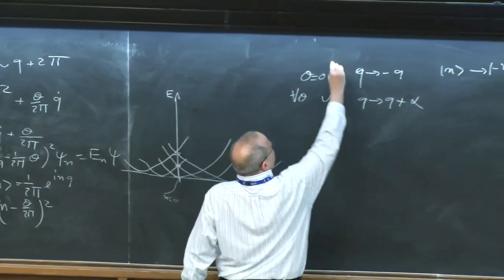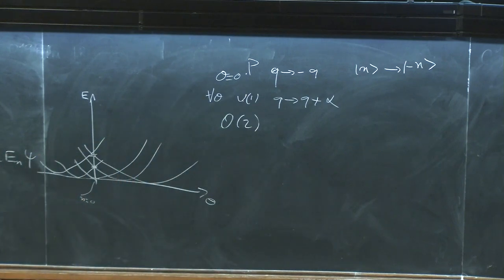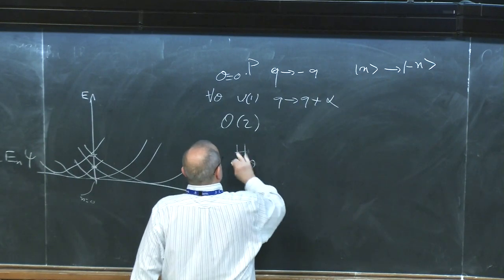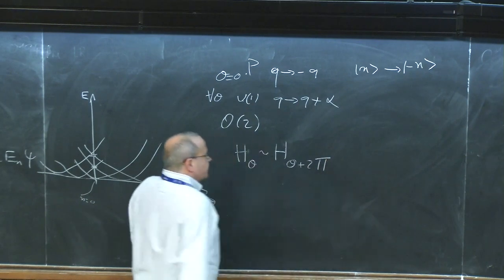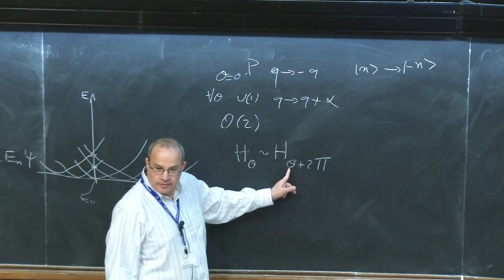These two symmetries — which we call P (for charge conjugation or parity) and U(1) — together give an O(2) symmetry. The global symmetry at θ=0 is O(2). At non-zero θ, P is broken, but U(1) remains a good symmetry. The Hamiltonian at θ is conjugate to the Hamiltonian at θ+2π, so physics is periodic in θ.